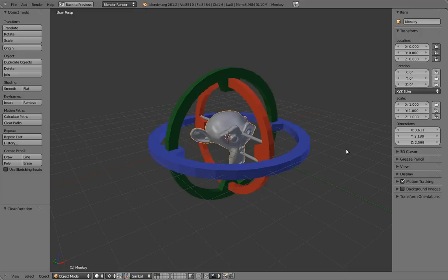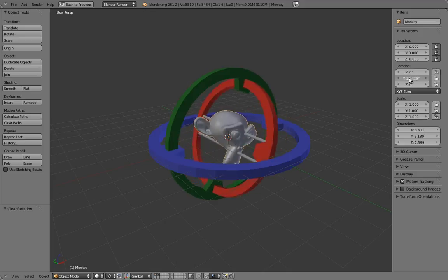Now, let's play with these axes individually. Playing with the x-axis, we can see the innermost ring rotate. Playing with the y-axis, we can see the mid-ring rotate. But notice that it's taking the innermost ring with it.